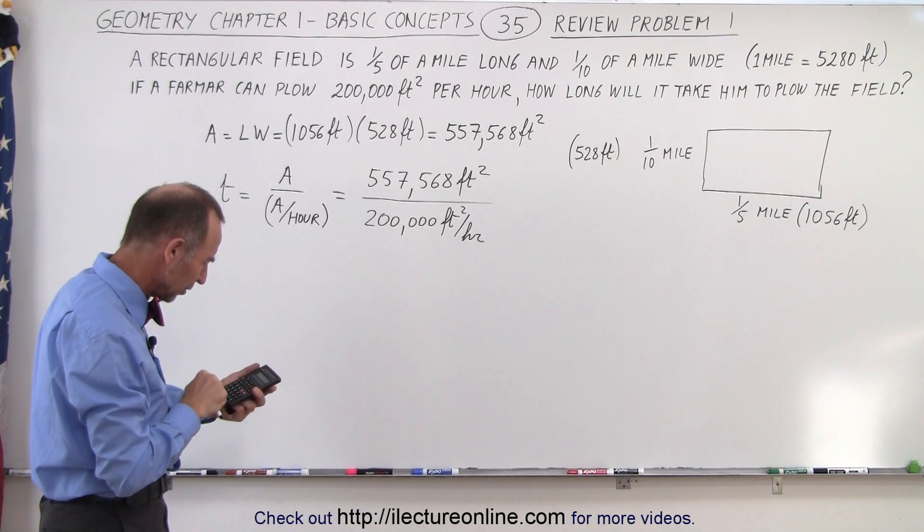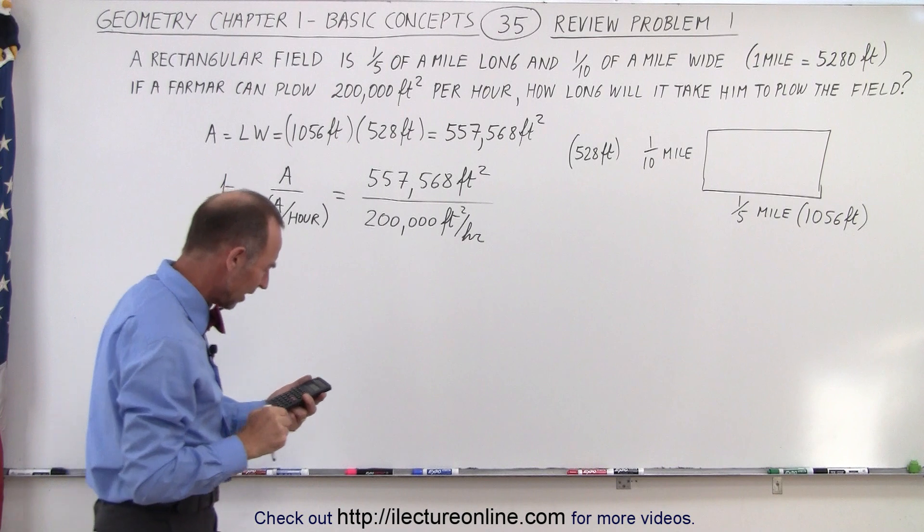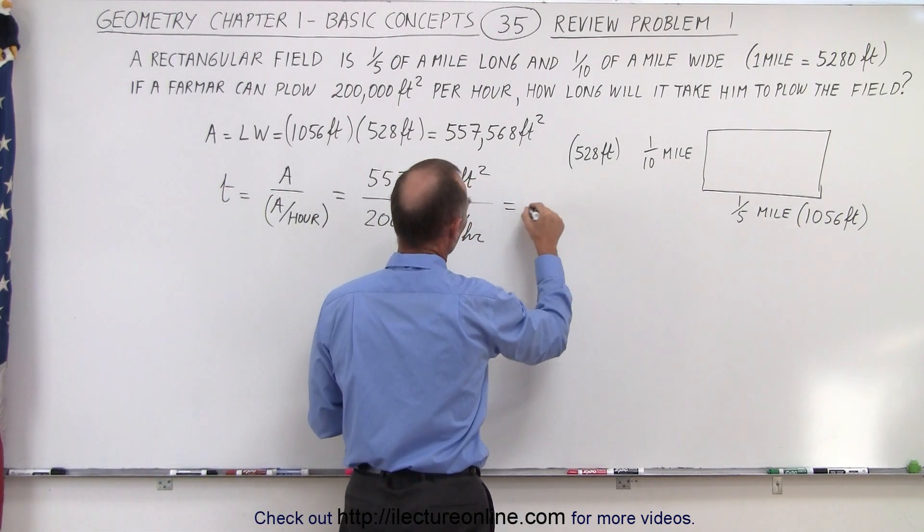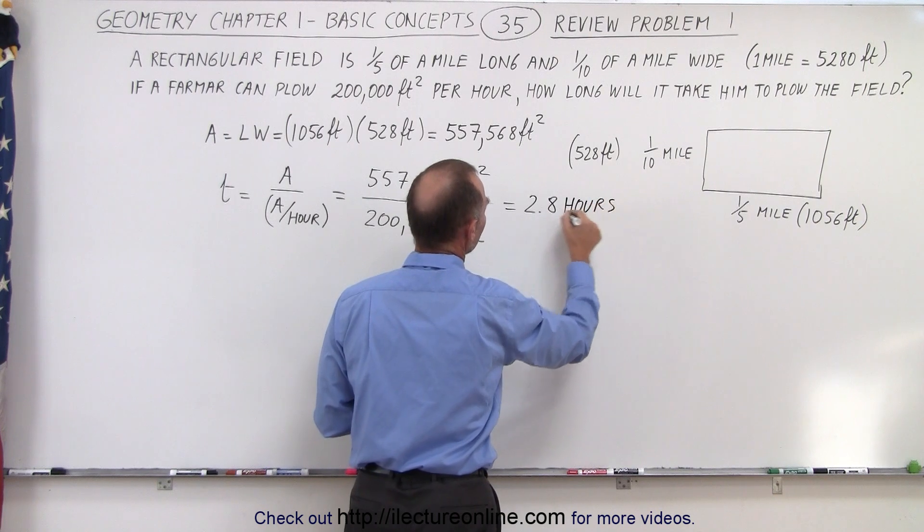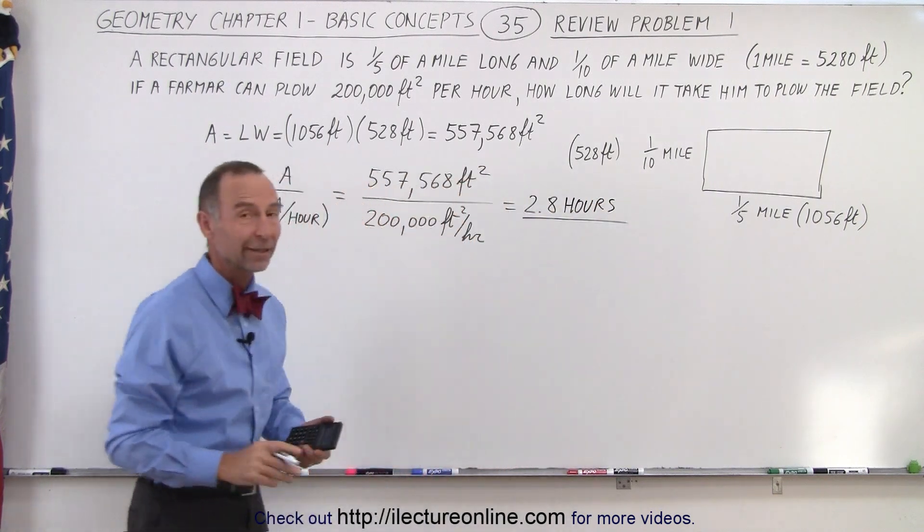So let's go ahead, divide, divide by 200,000. And the time would be about 2.8 hours. So slightly less than three hours for the farmer to plow the entire field.